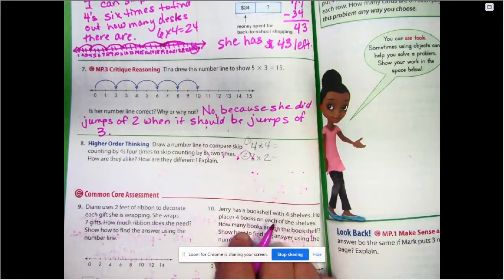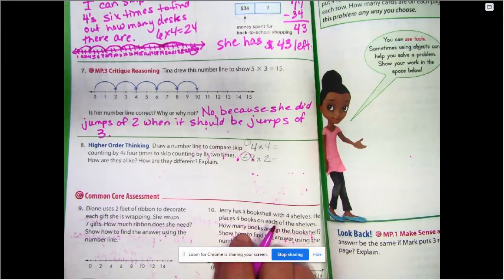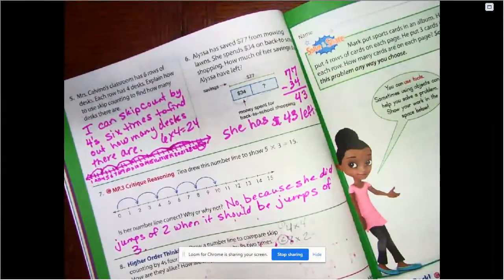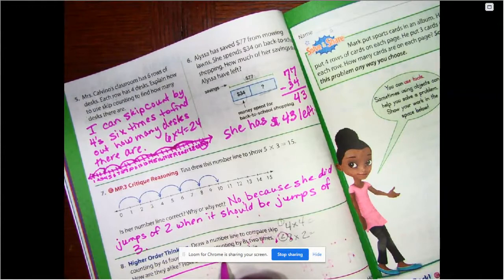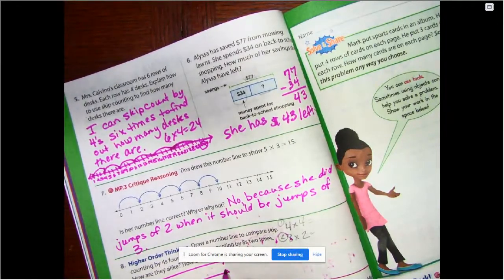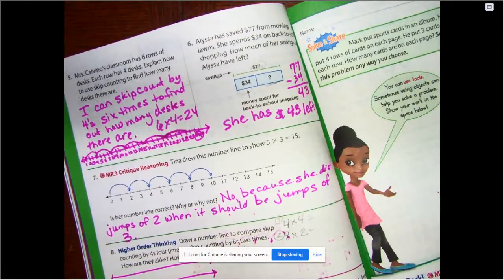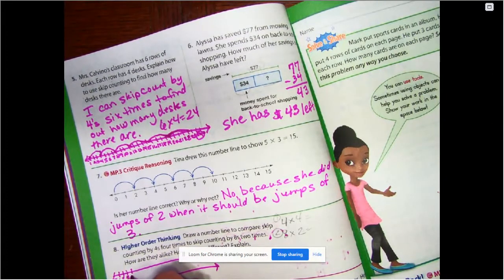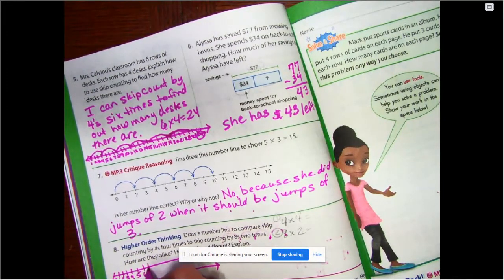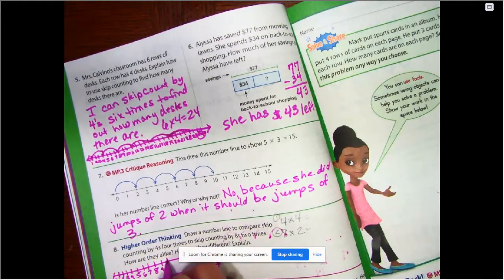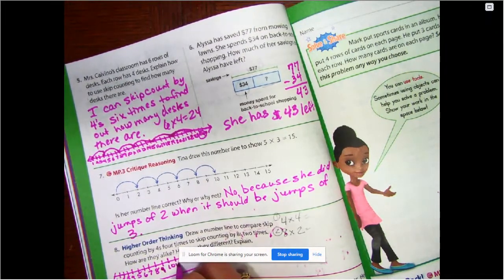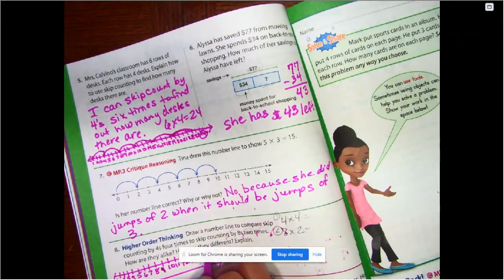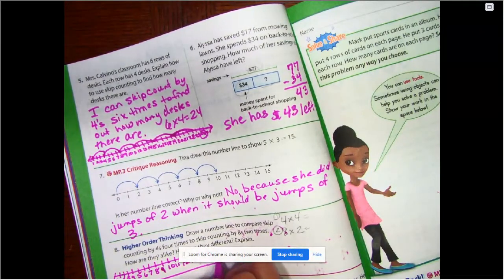Number eight. Draw a number line to compare skip counting by fours four times to skip counting by eights two times. How are they alike? How are they different? Okay. So we've got two number lines. Skip count by fours four times. One, two, three, four, five, six, seven, eight, nine, ten, eleven, twelve, thirteen, fourteen, fifteen, sixteen. That's all I can fit there.